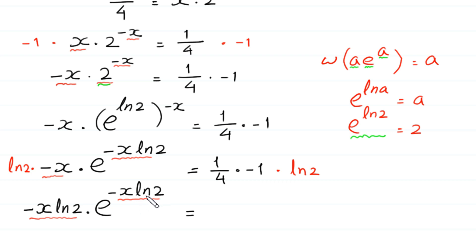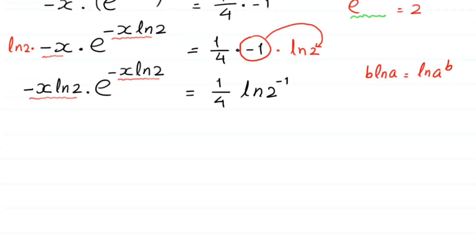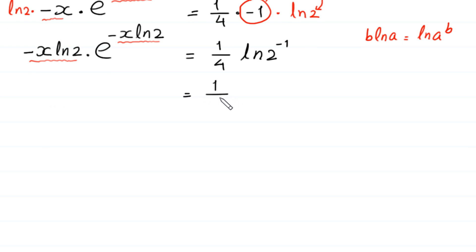We want to use the Lambert W function on both sides. So we manipulate the right side. The right side is negative 1 over 4 times ln 2. According to natural log property, b times ln a equals ln of a^b, so this negative 1 becomes the power of 2: ln of 2^(negative 1). Then according to the property a^(negative 1) equals 1 over a, we write ln of 1 over 2.